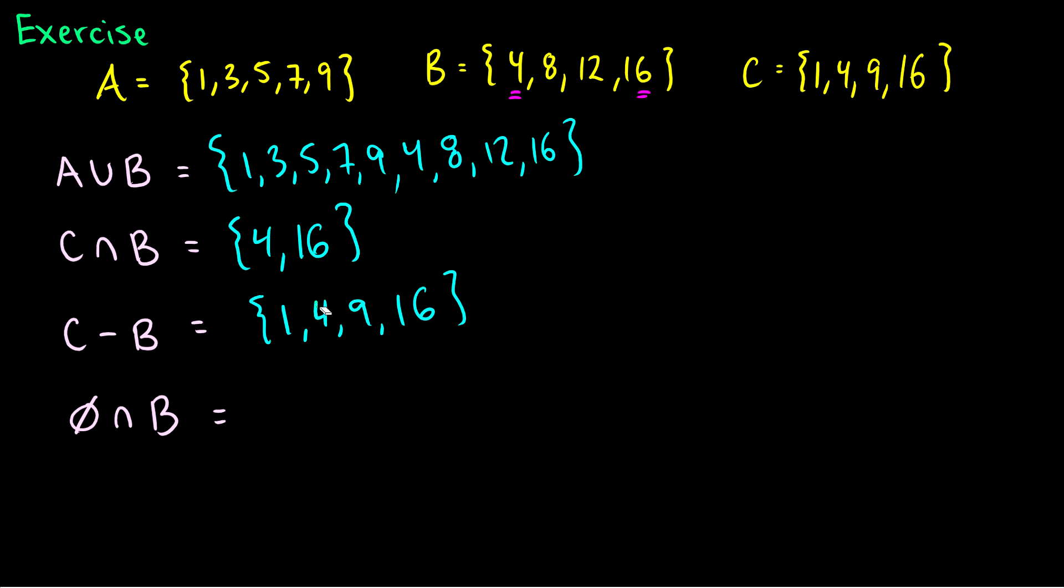Now let's subtract things that are in B. Well 4 is in B, so let's get rid of it, and 16 is in B, so let's get rid of it. So now we're left with the set 1, 9, and that is exactly what C minus B is, or C difference B.